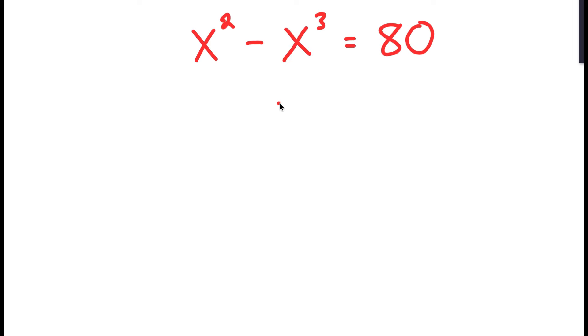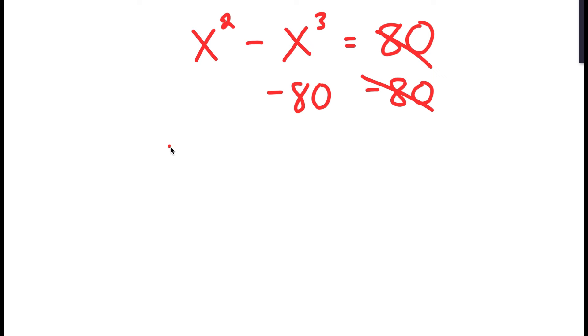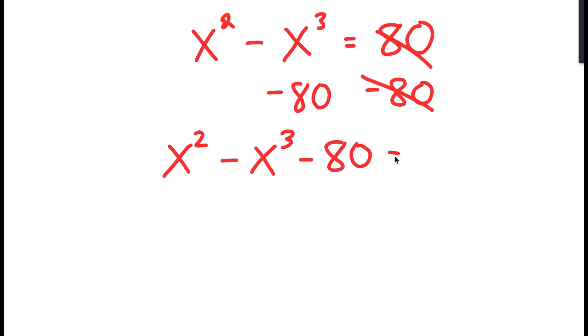To solve this equation, I'm going to first start by subtracting 80 on both sides. So now I get x to the power of 2 minus x to the power of 3 minus 80 is equal to 0.